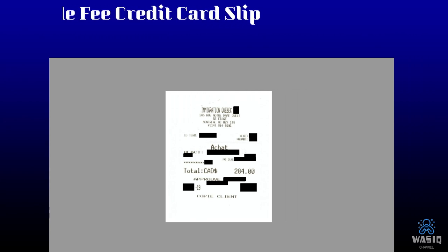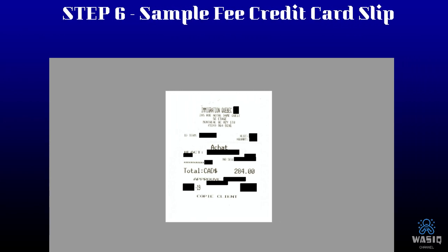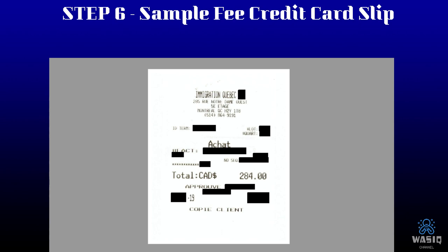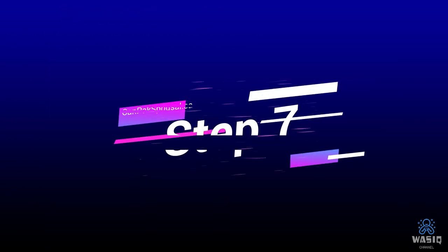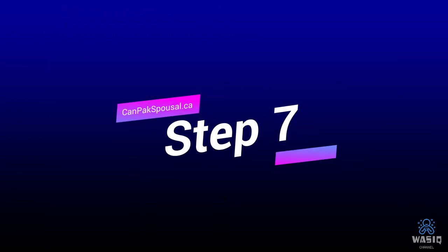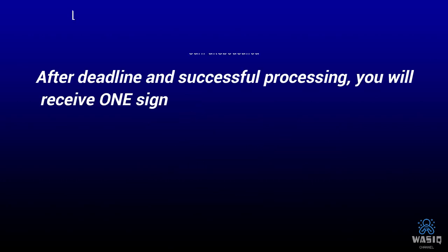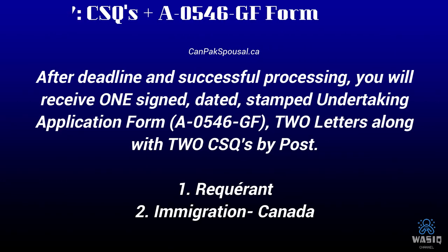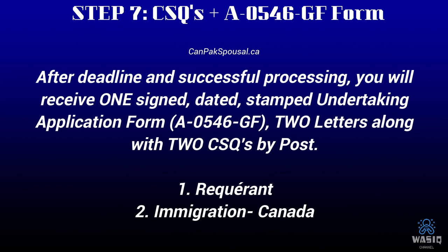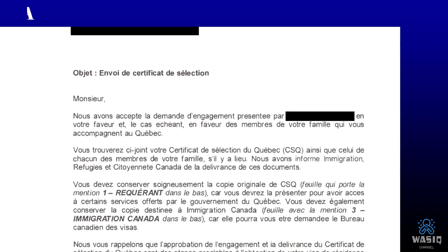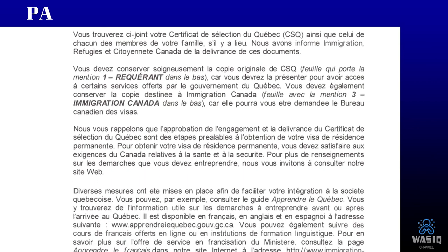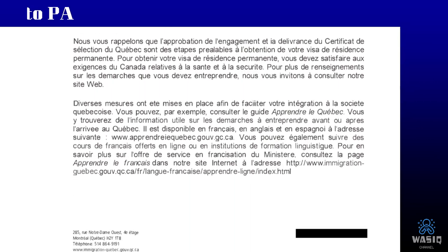This is the credit card slip which they also enclose in your application package. Step seven: after the deadline and successful processing, you will receive one signed, dated, and stamped undertaking application form, two letters, and two CSQs by post from IRCC and Immigration Canada. This is the letter you will receive when your CSQ application has been processed successfully.